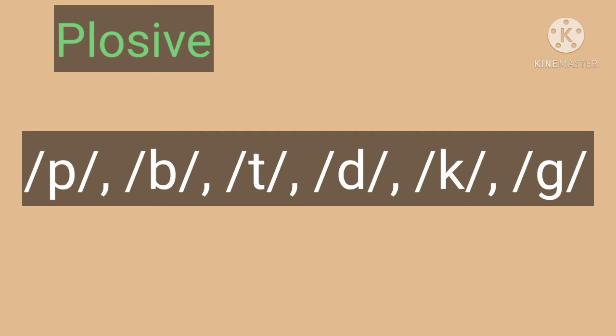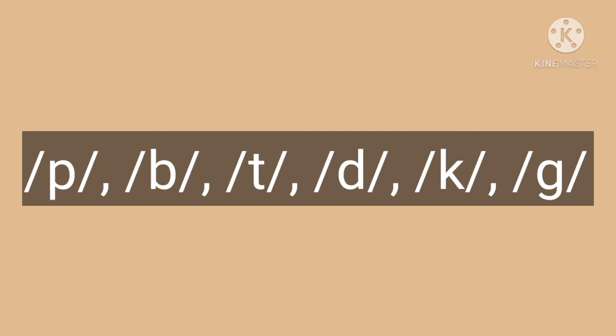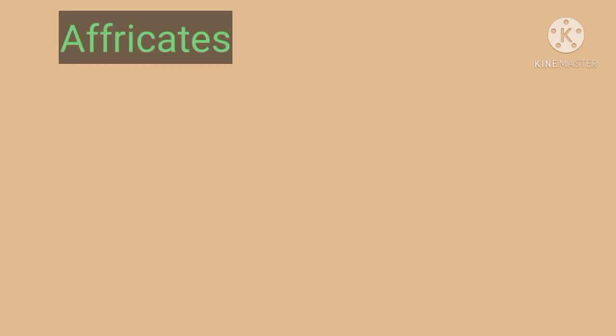P is voiceless bilabial plosive. B is voiced bilabial plosive. T is voiceless alveolar plosive. D is voiced alveolar plosive. K is voiceless velar plosive. G is voiced velar plosive.